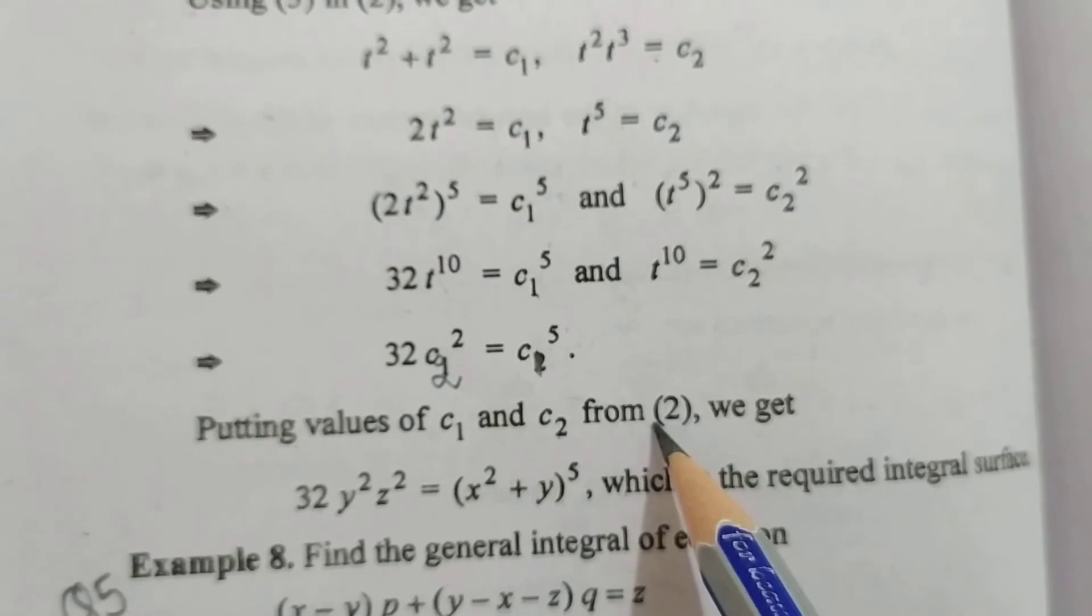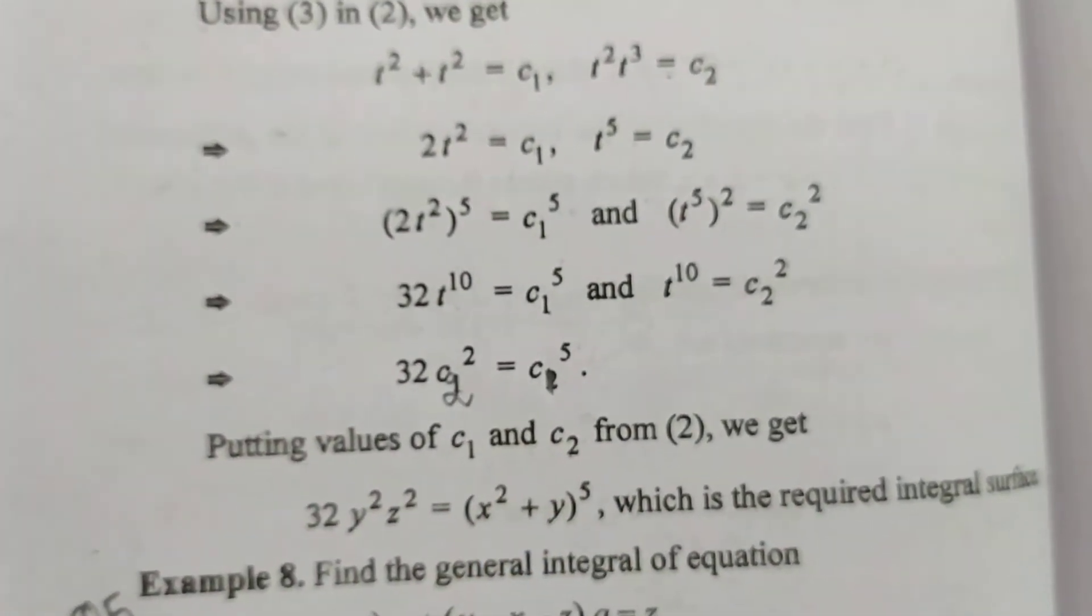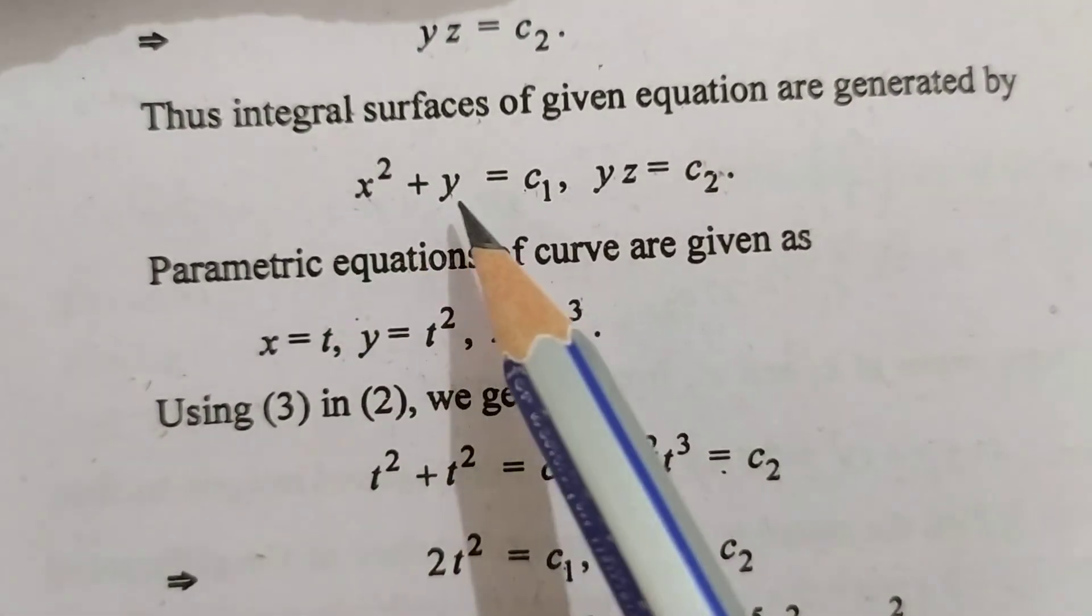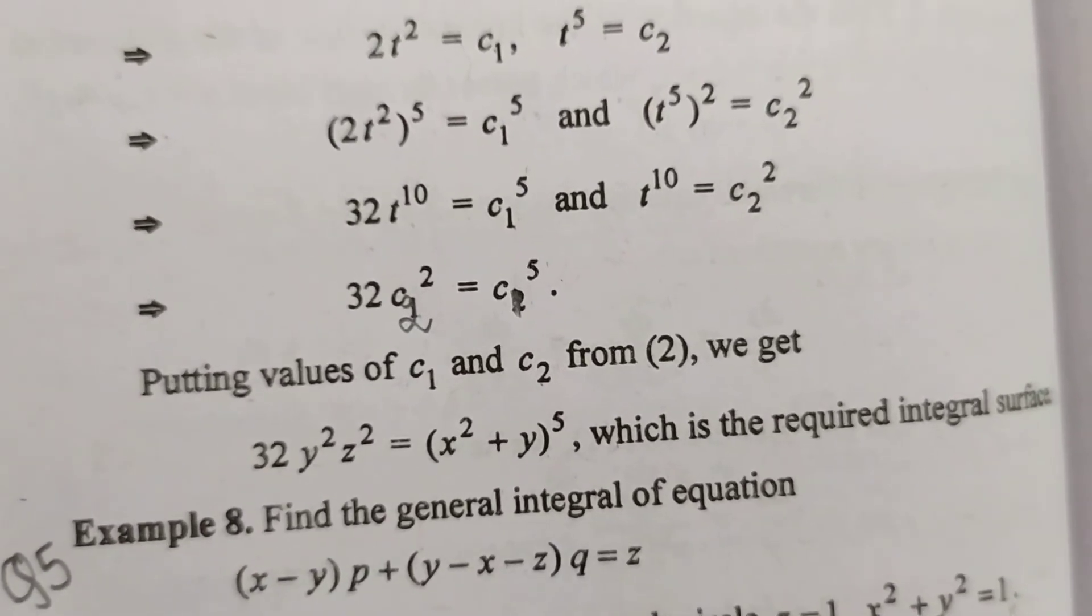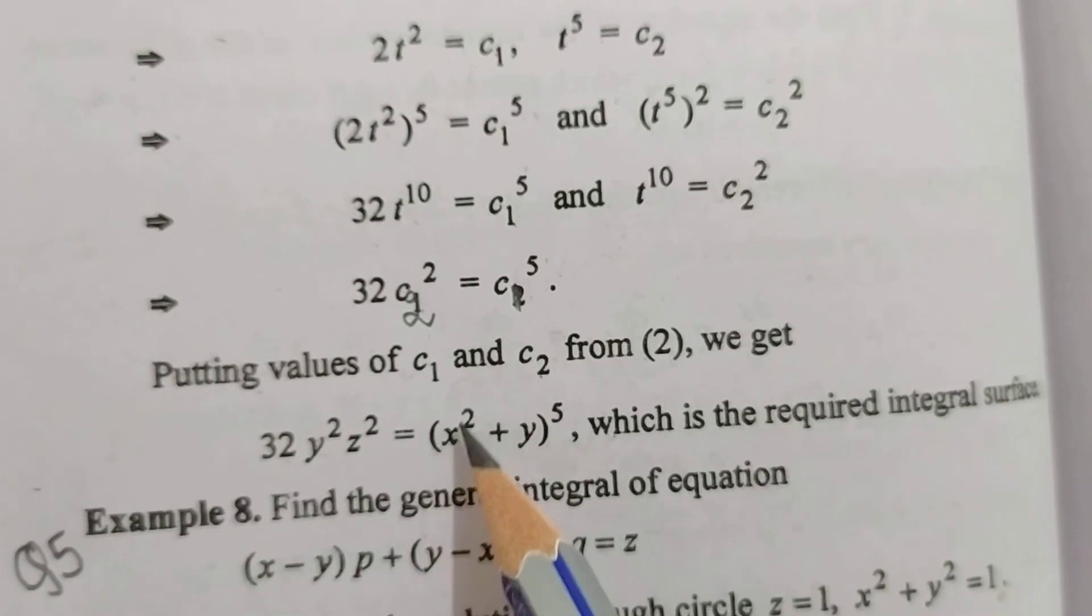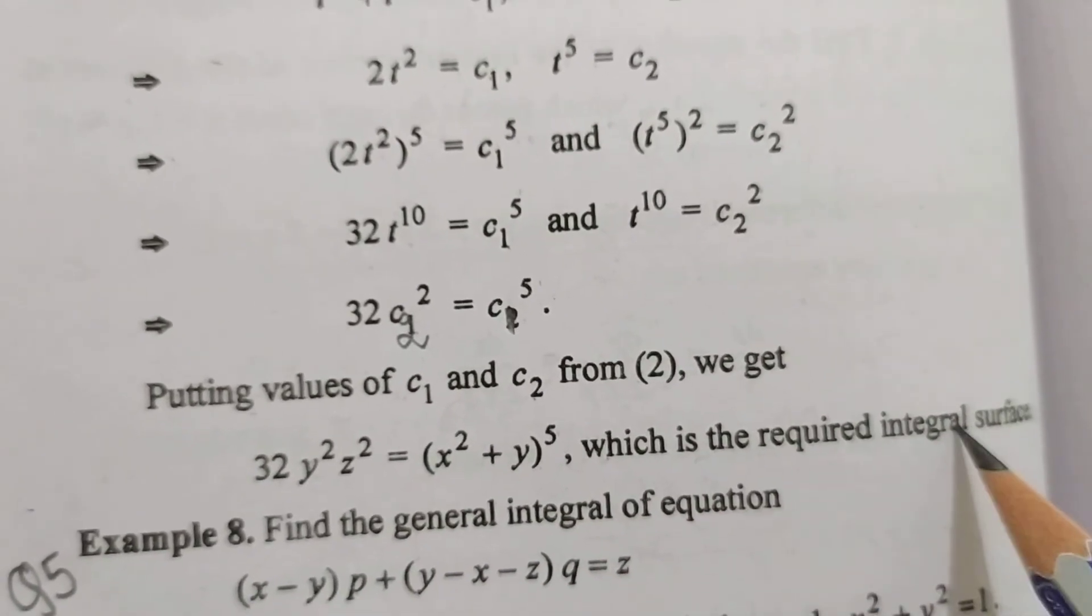Putting value of c1 and c2 from 2 we get, c2 ki value kya aati humari? yz aur c1 ki value x square plus y. Yahan par humne put kar diya: 32 y square z square is equal to x square plus y ki power 5, which is a required integral surface.